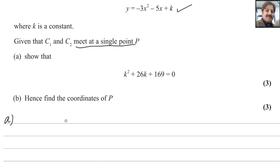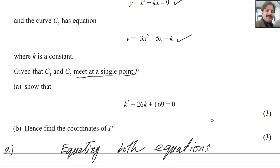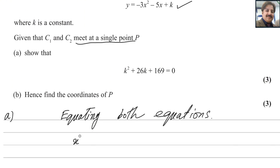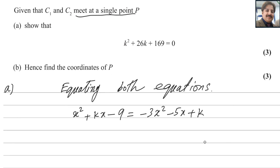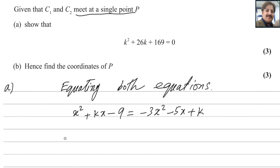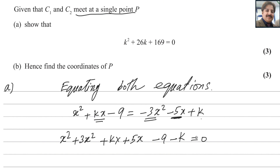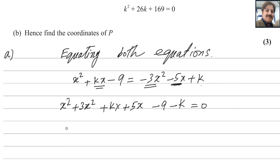Equating both equations: x squared plus kx minus 9 equals minus x squared minus 5x plus k. Now we bring all values to the left side. Minus x squared becomes plus x squared, giving us plus x squared. This is kx, and minus 5x becomes positive 5x on the left side. Minus 9 and bring k over, so it becomes minus k equals 0.